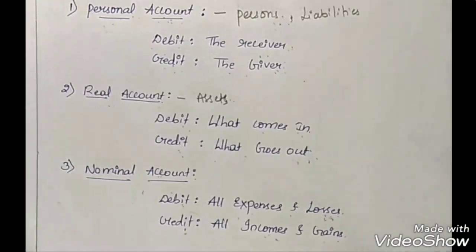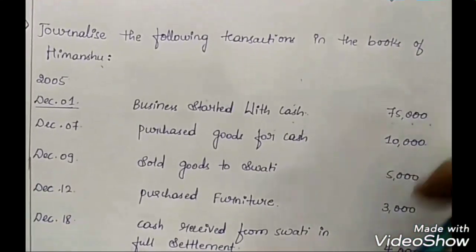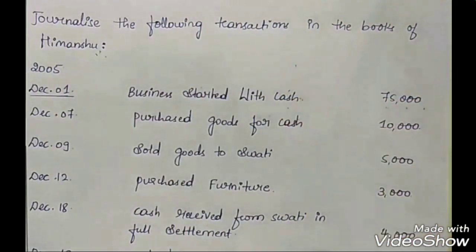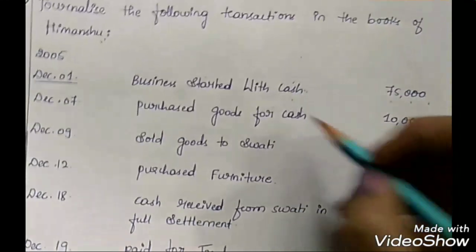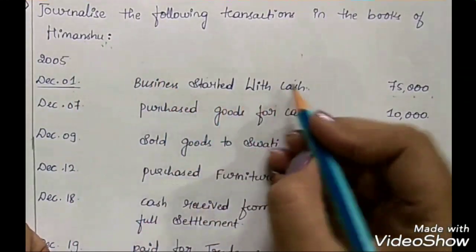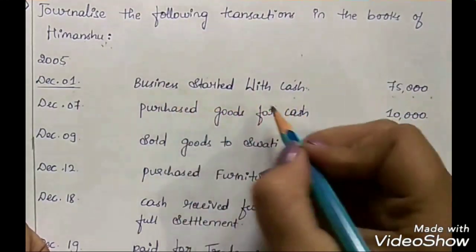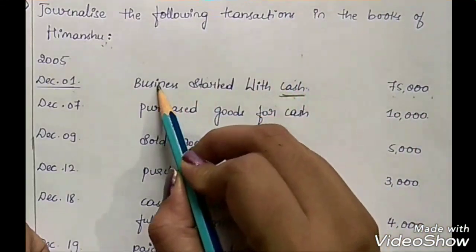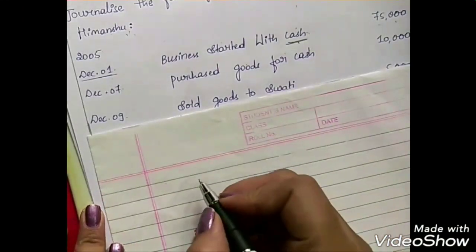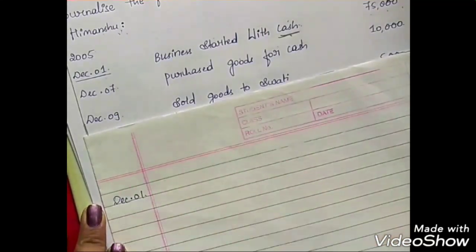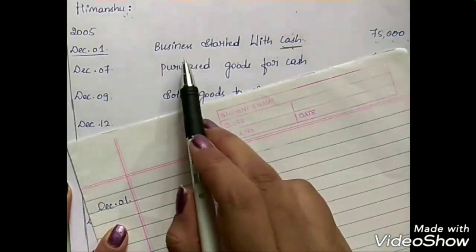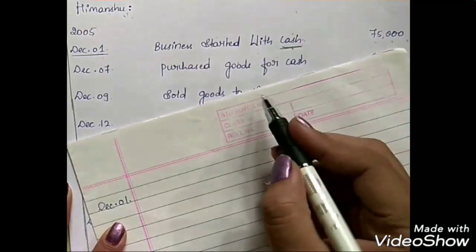Now let us go to the problem. Journalize the following transactions in the books of Himanshu. Himanshu is a businessman who has performed these financial transactions. The first transaction: on December 1st, 2005, Himanshu started business with cash rupees 75,000. For every transaction there will be two accounts — one debit account and one credit account.